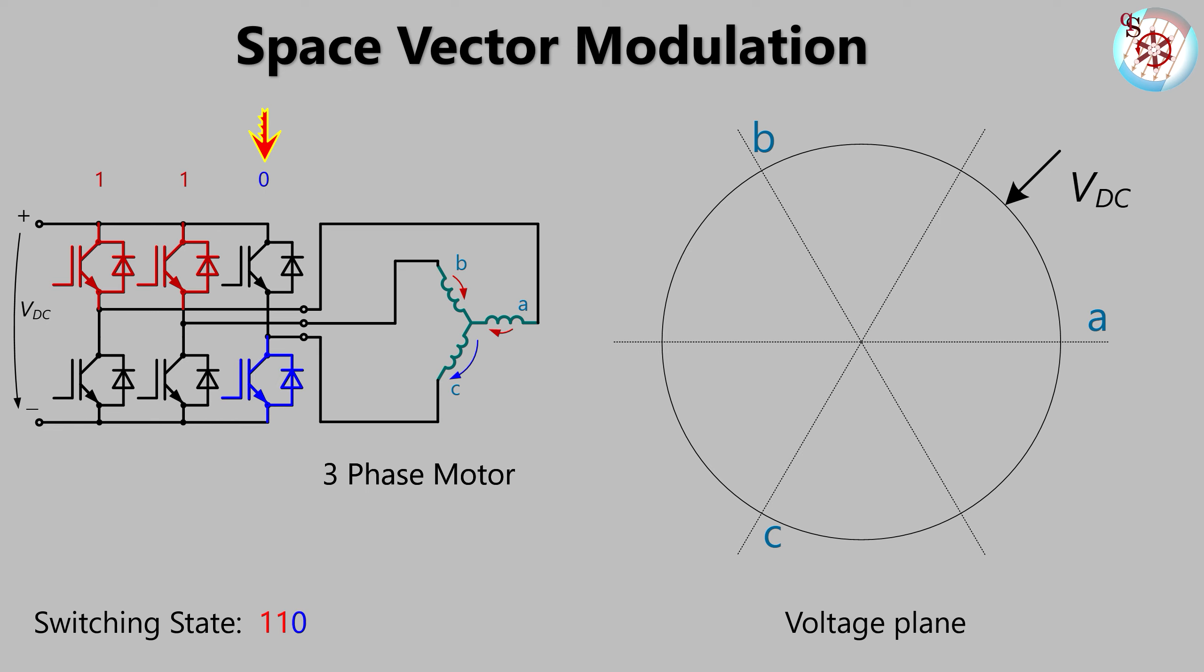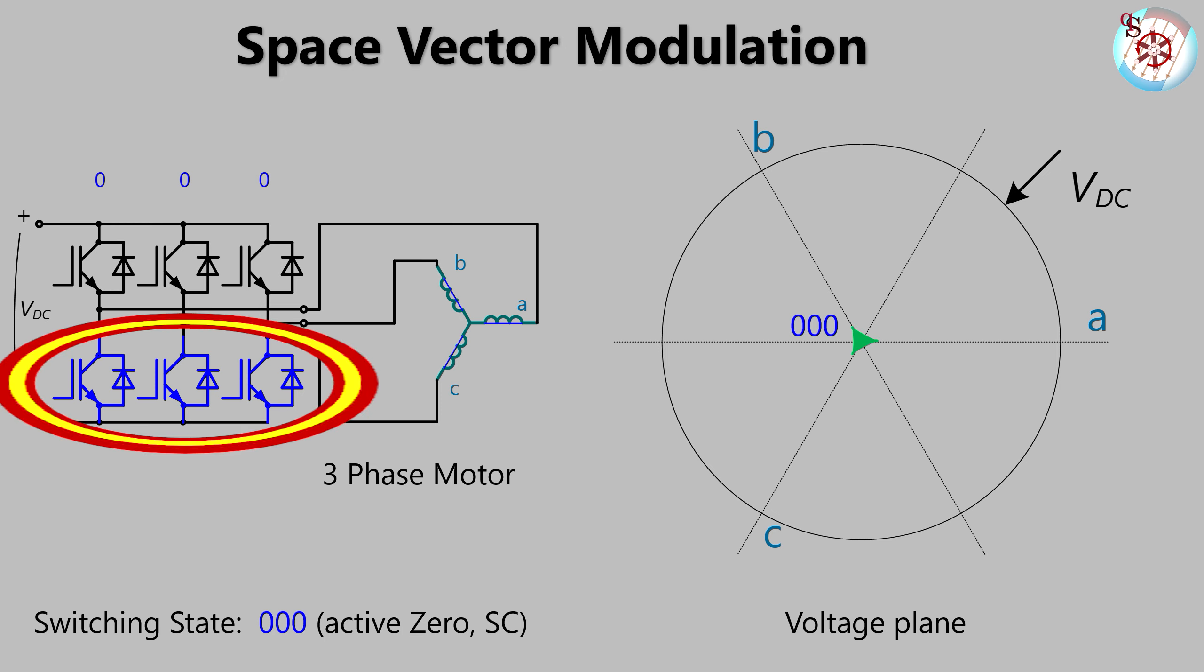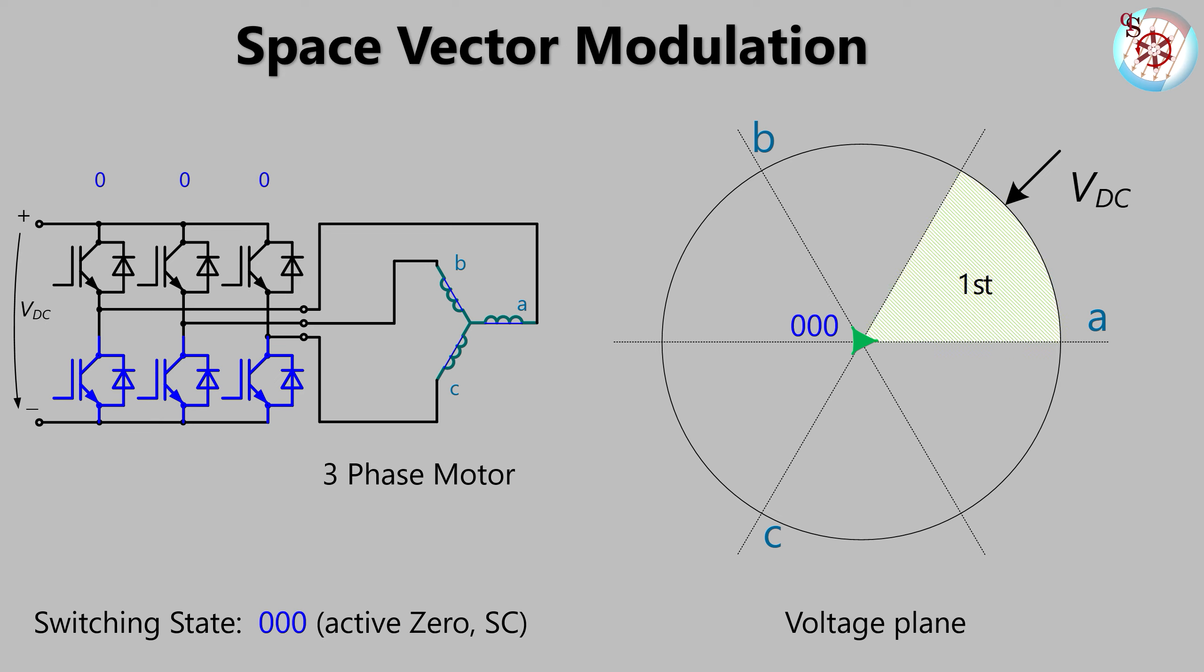By switching the third leg we go back to double one zero. Switching the second leg we get one double zero. And finally we return to triple zero. That was a full cycle. We are back to where we started. Okay. With this general switching pattern we covered one sector, which is sector one, the first sector.